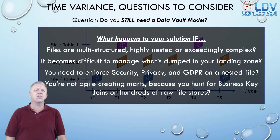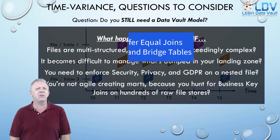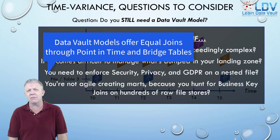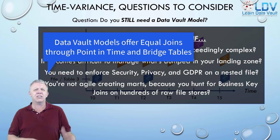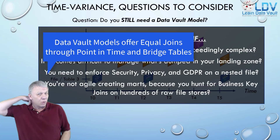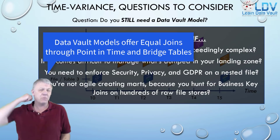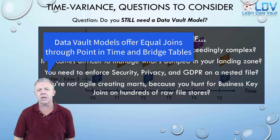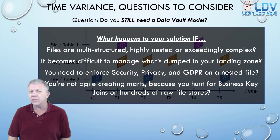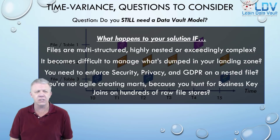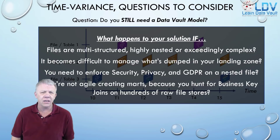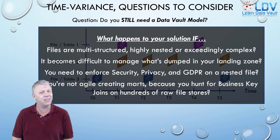The Data Vault solves these problems using point-in-time and bridge tables. We can actually offer equi-joins to the BI tooling on top of Data Vault models to solve some of these issues, including co-location and redistribution of data that doesn't need to happen.